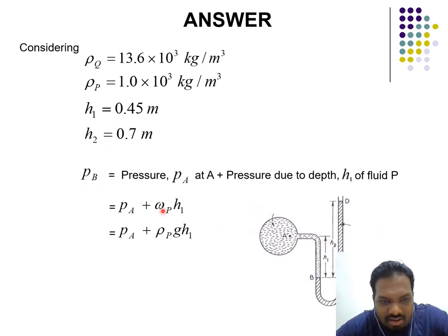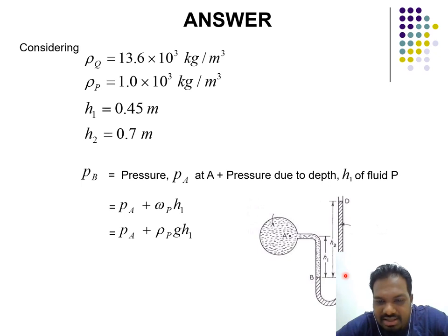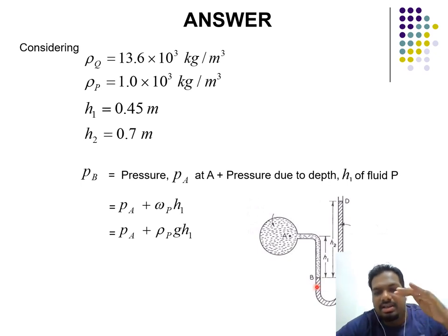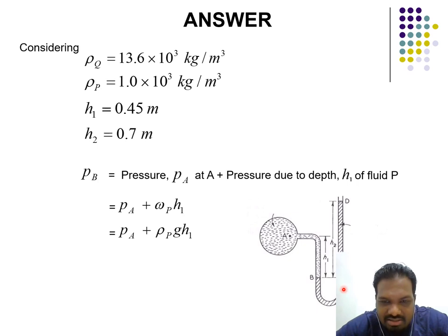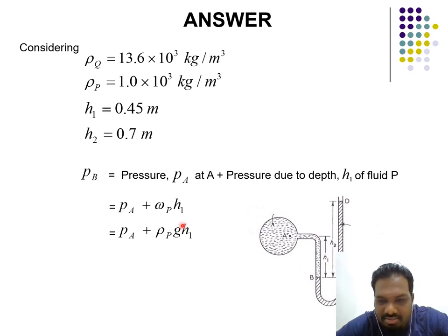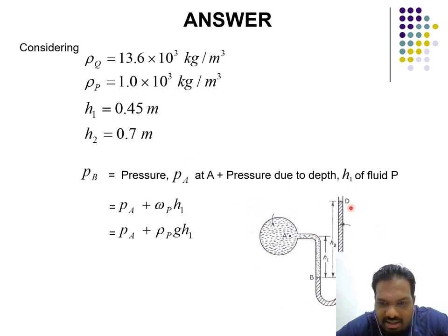From the setup, we know that pressure at B and pressure at C must be the same because they are at the same height. So based on that we can form equations. First, look at the left-hand side, then move to the right-hand side.